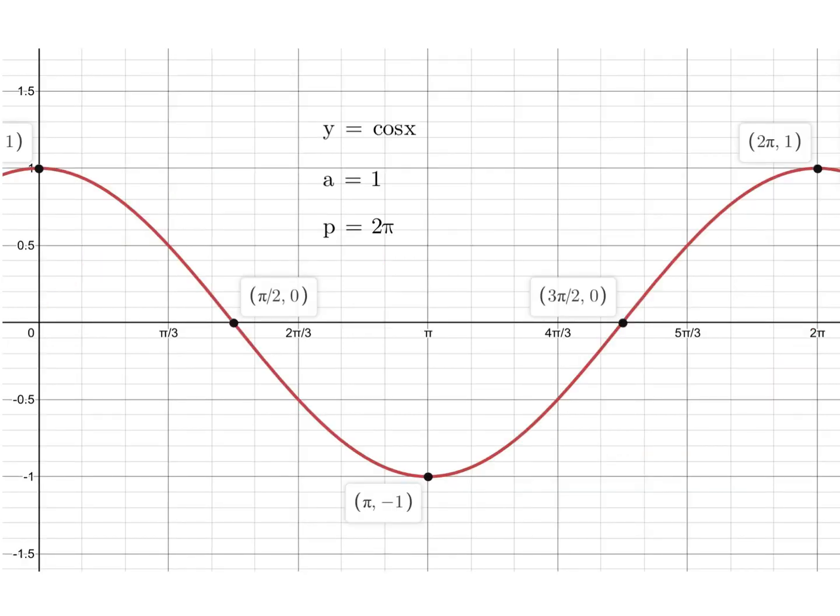For the cos curve, it starts when x equals 0, so it starts at 1. So its amplitude is 1, just like the sine curve, and its period's the same, it's 2π. So it starts at (0, 1), and at 2π it returns to 1 again and then starts over. So that's our period.